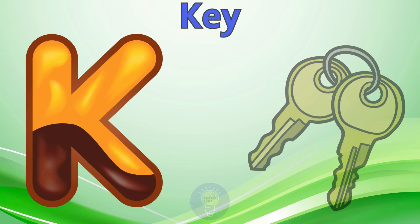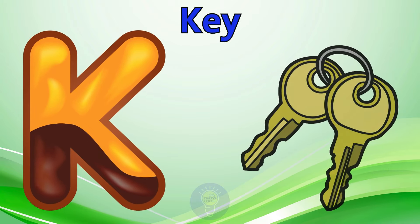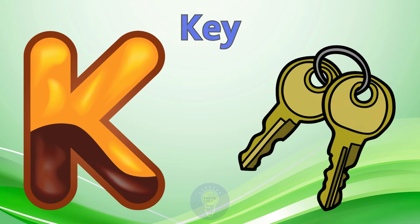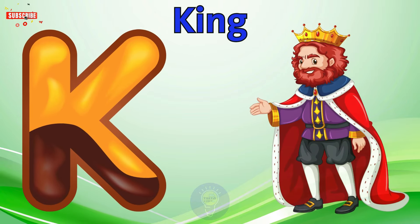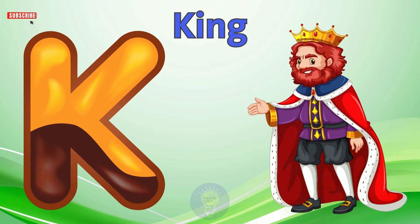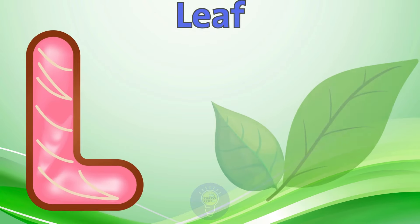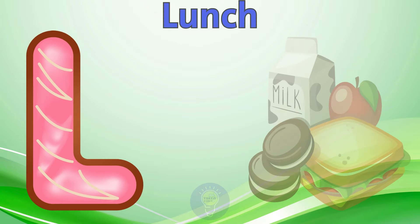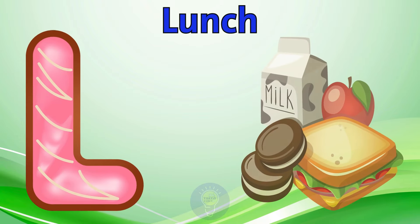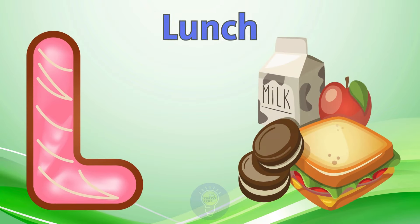K is for Key. K, K. Key. K is for King. K, K. King. L is for Leaf. L, L. Leaf. L is for Lunch. L, L. Lunch.